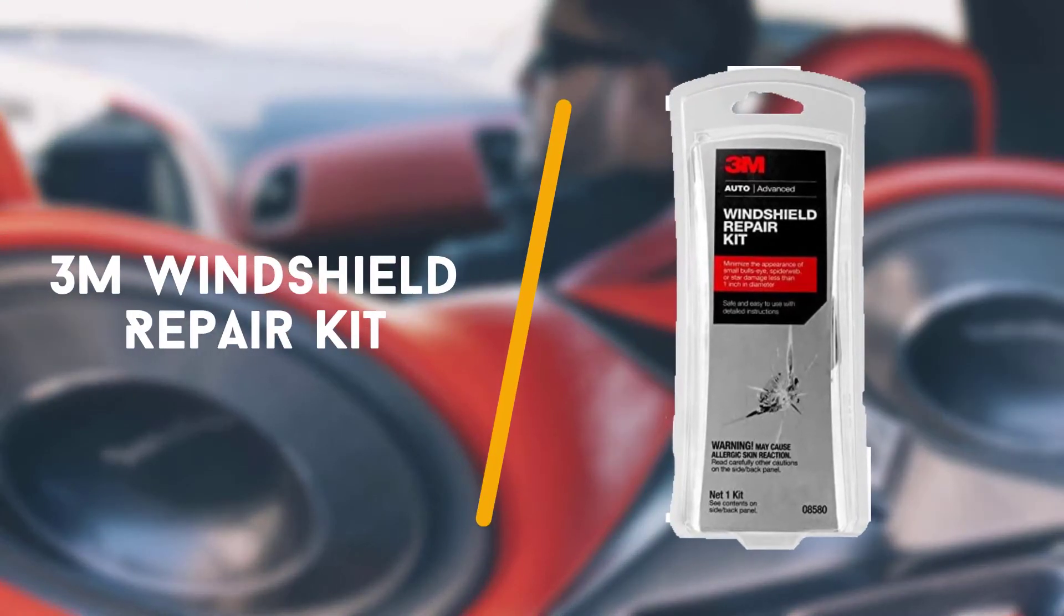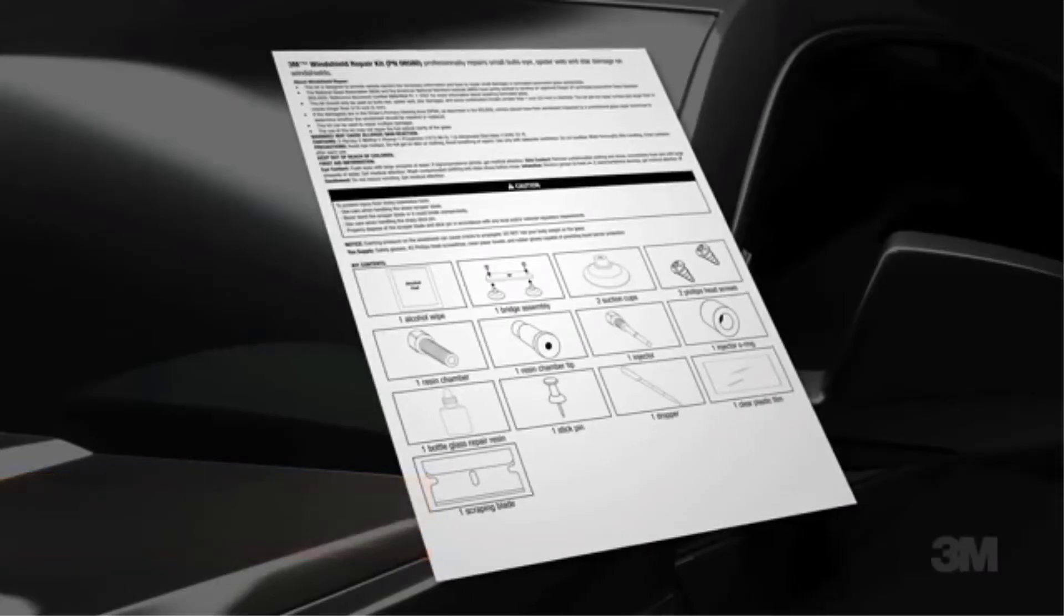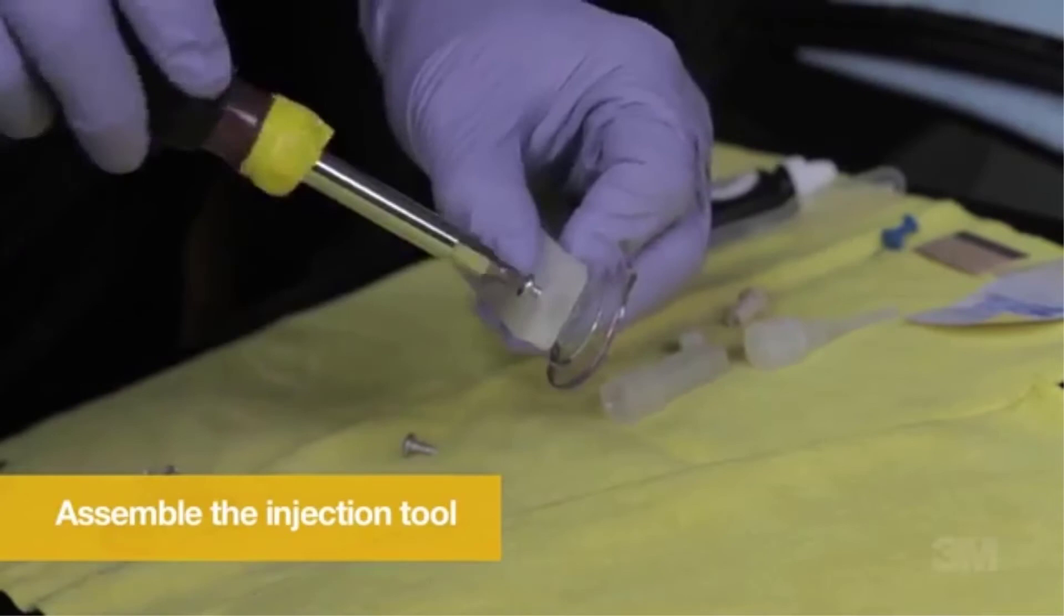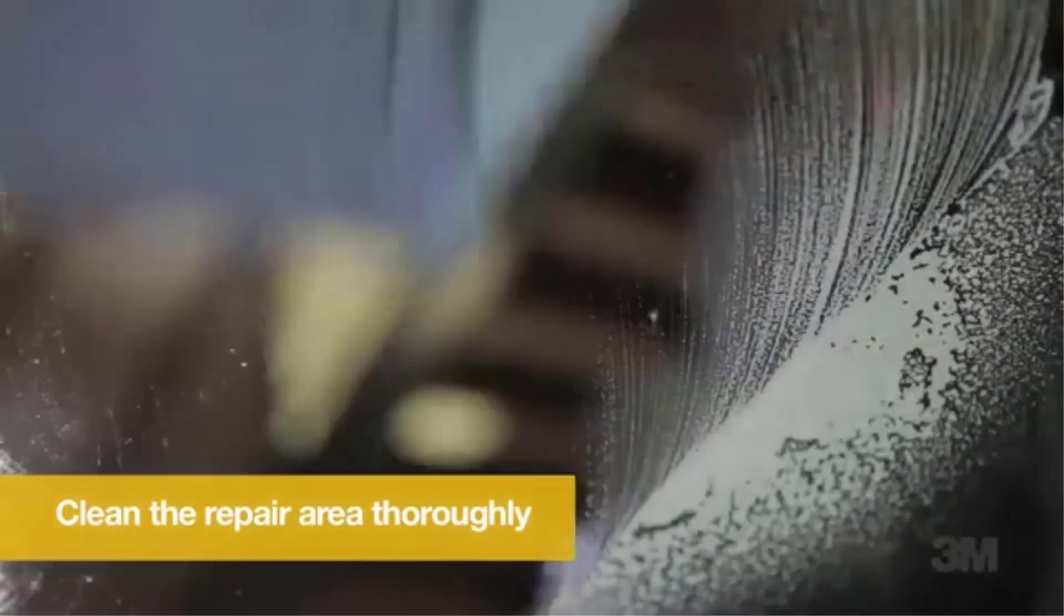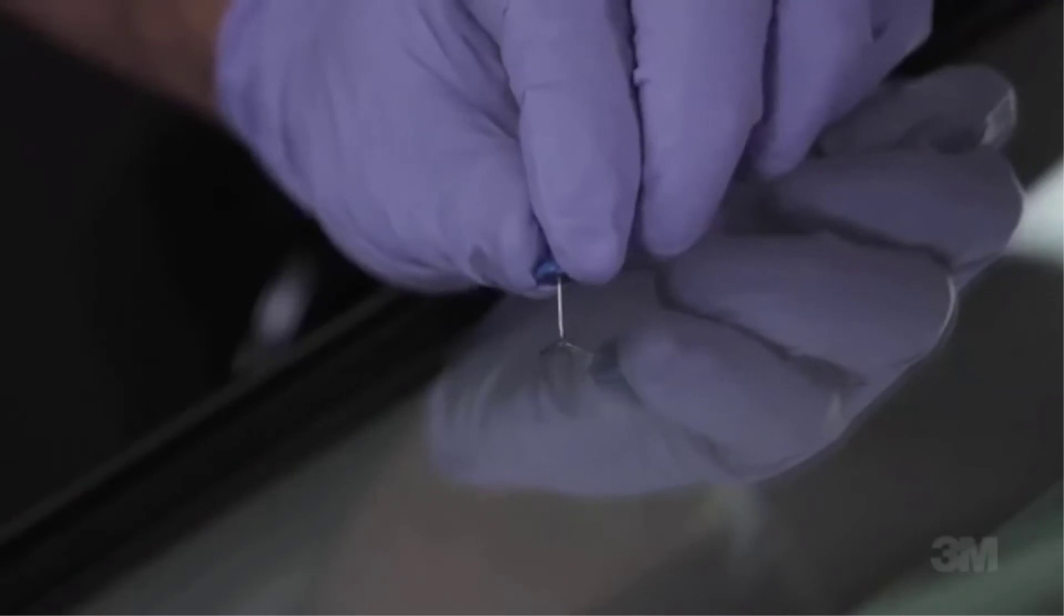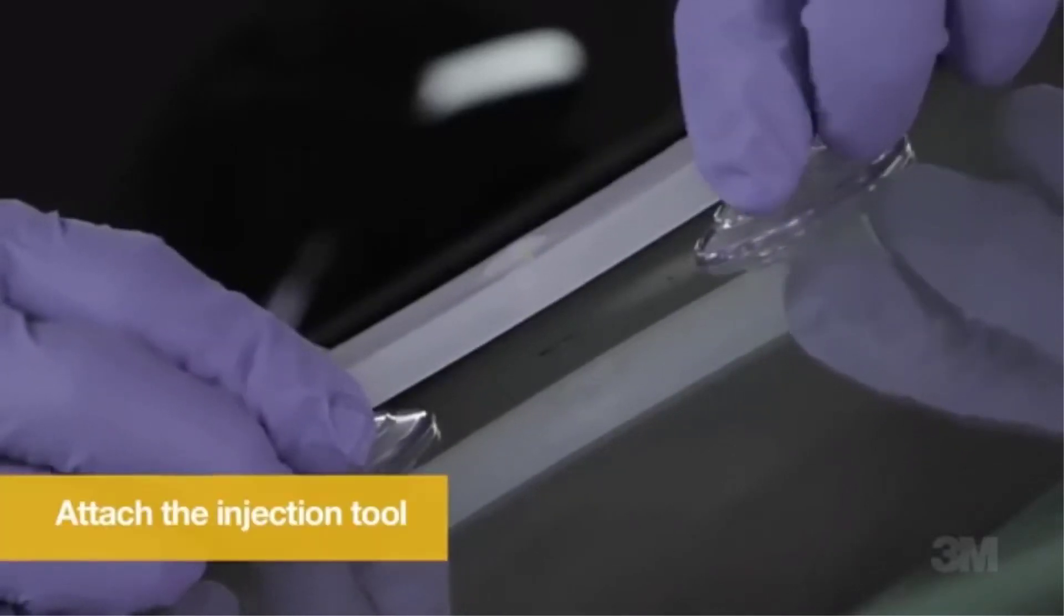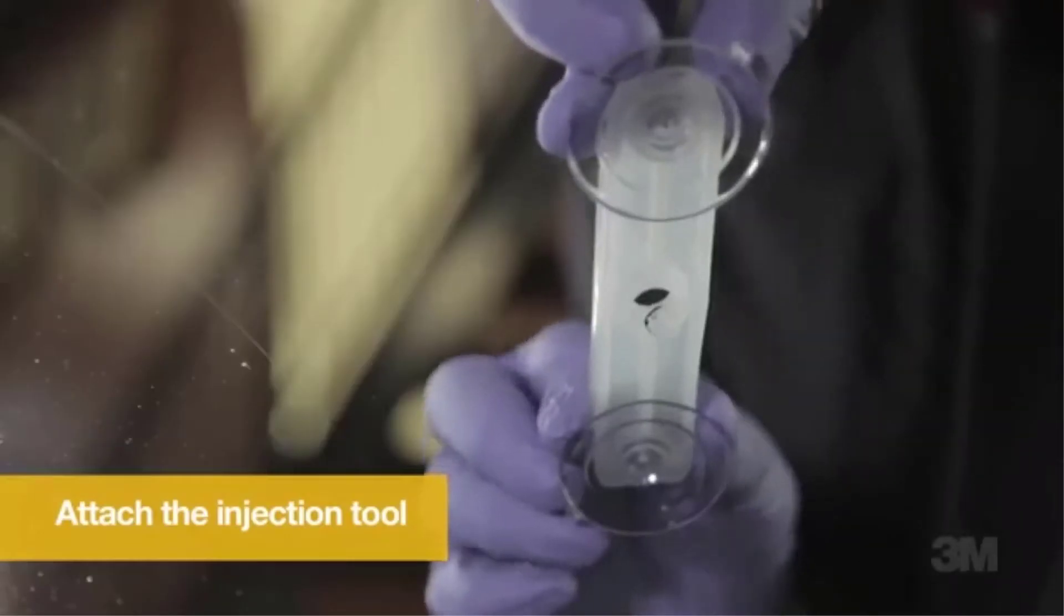Next up is the 3M windshield repair kit. 3M is a renowned company producing some of the best car care and home improvement products, and their windshield repair kit is one of them. The kit comes with a dual suction stabilizer, a bottle of resin liquid, a couple of wipes, a dropper, and a blade.